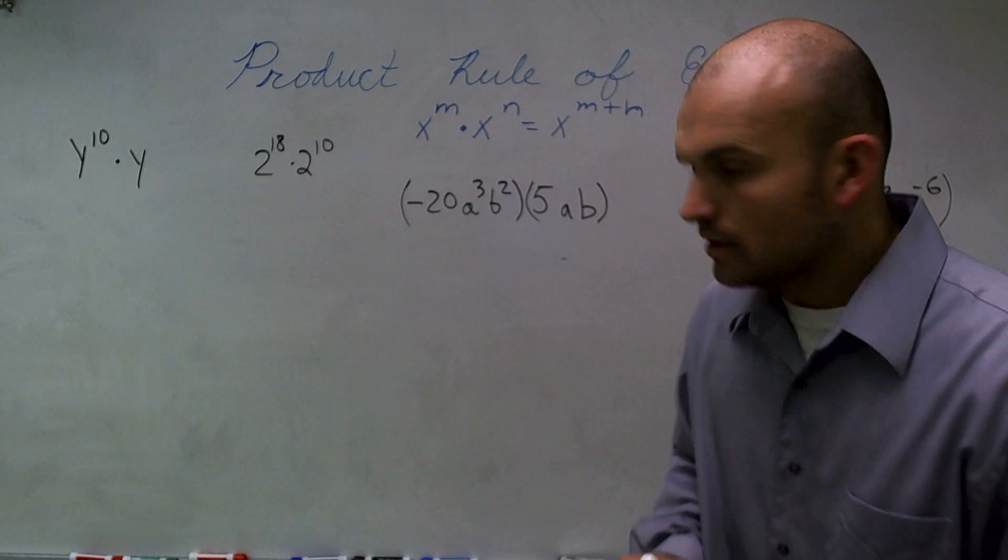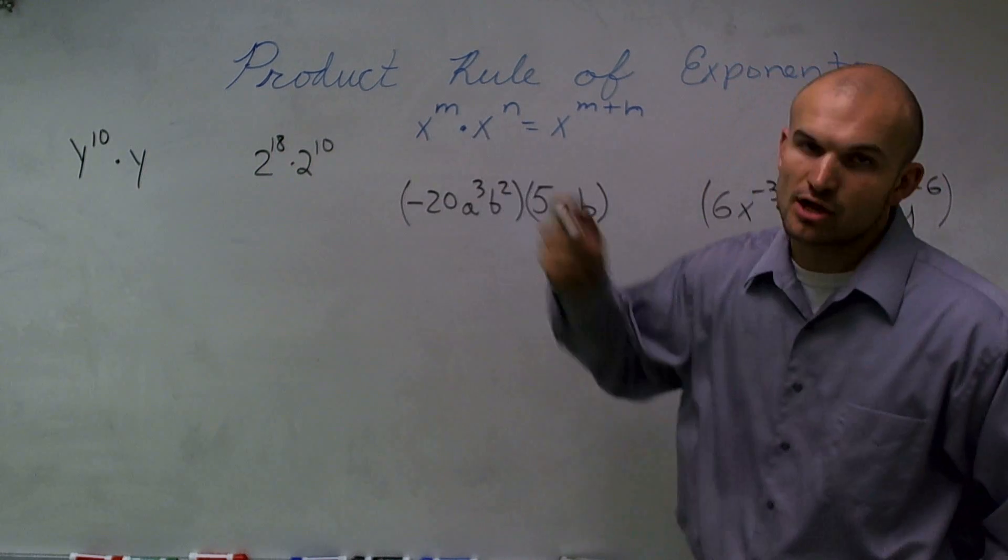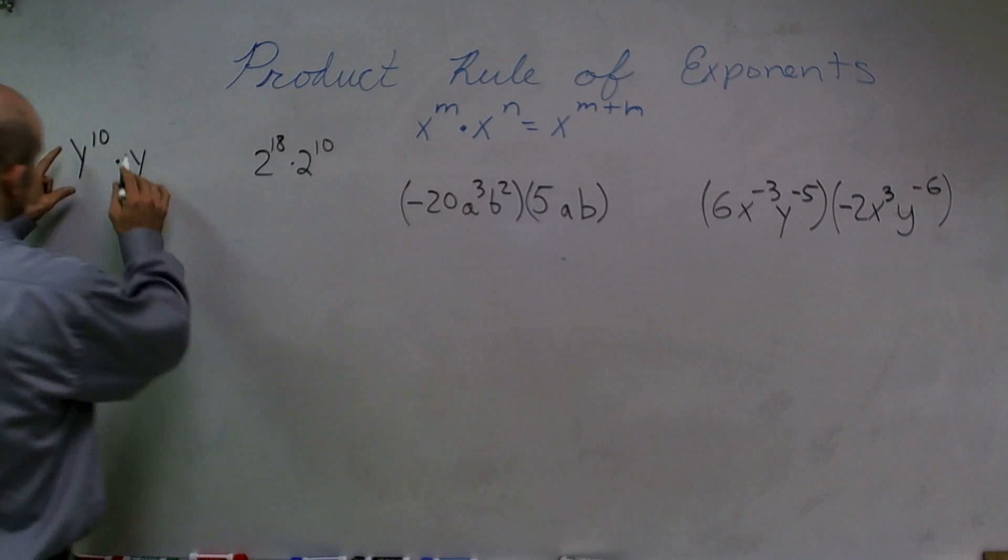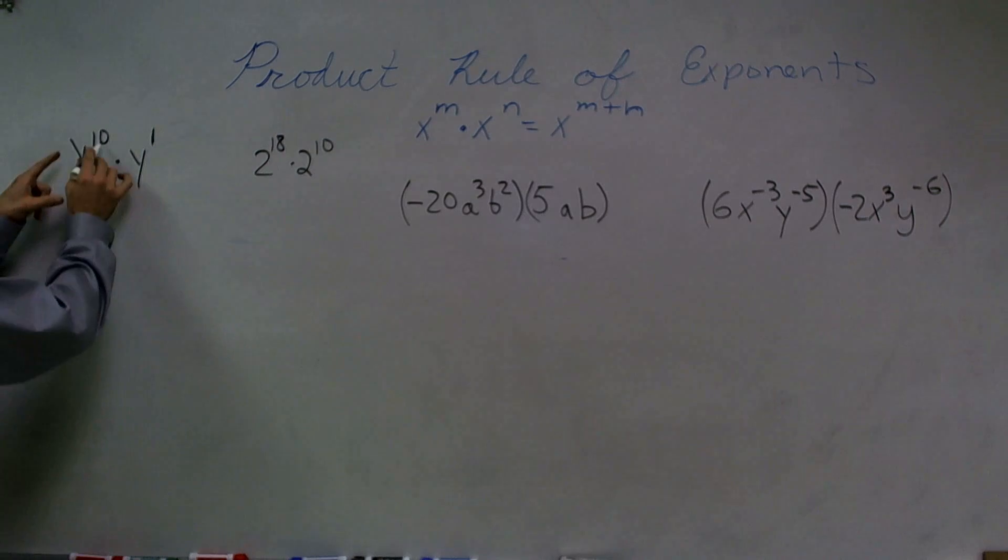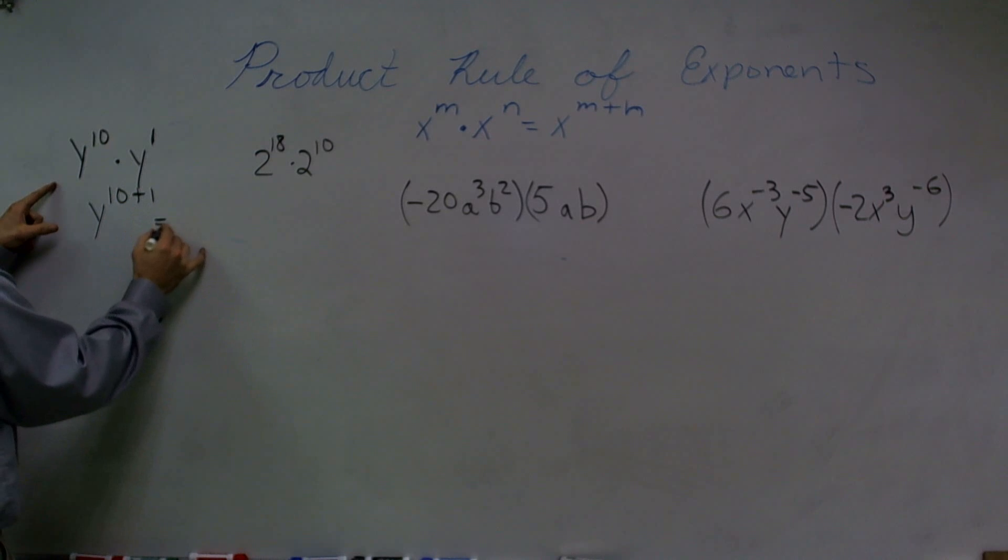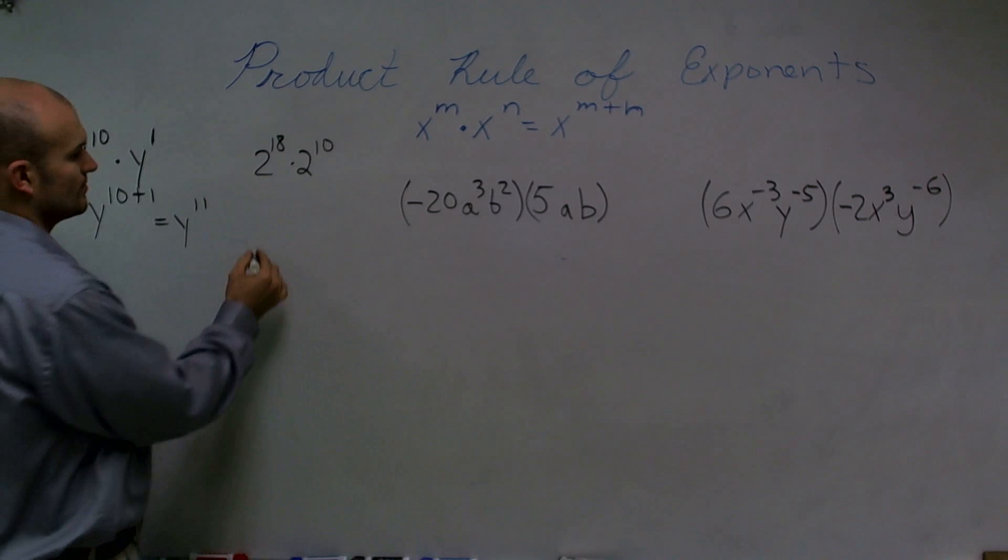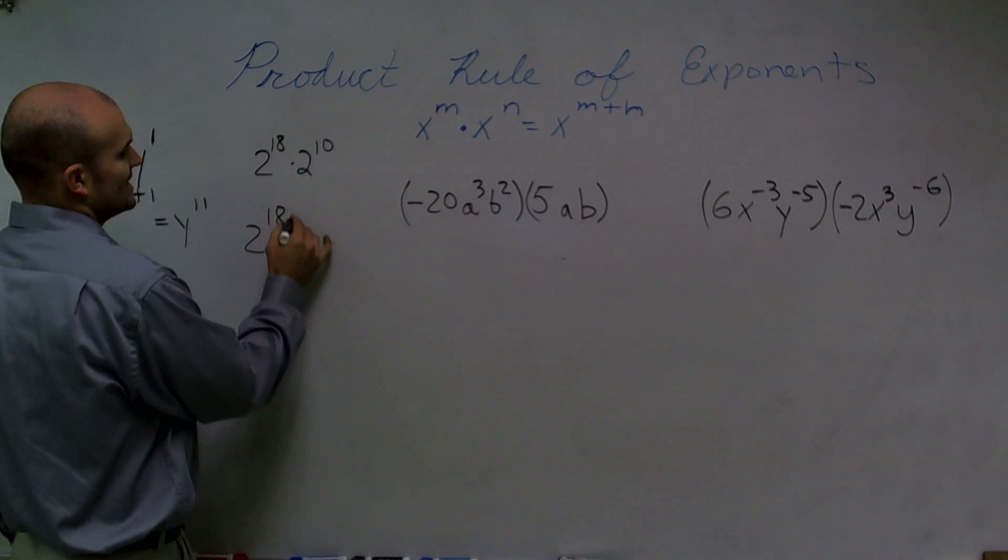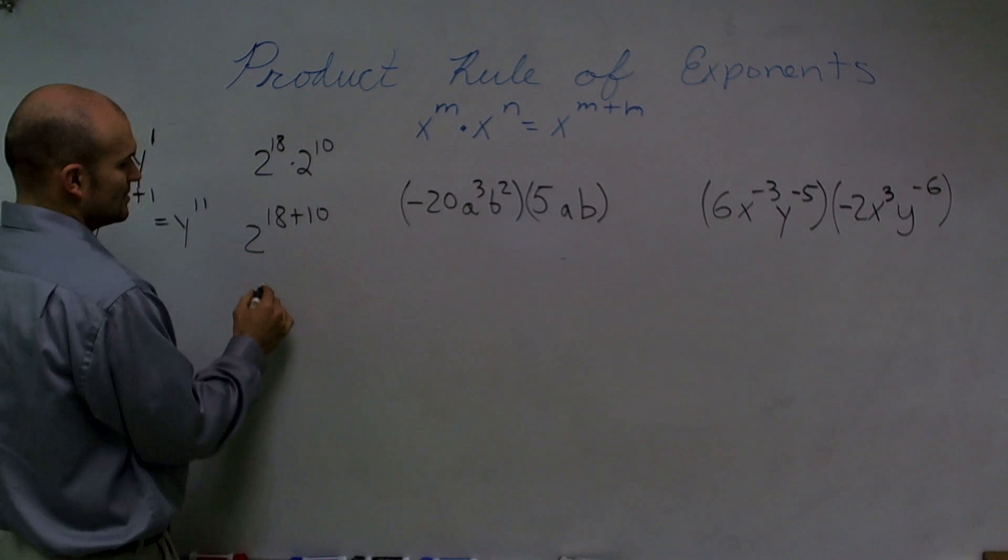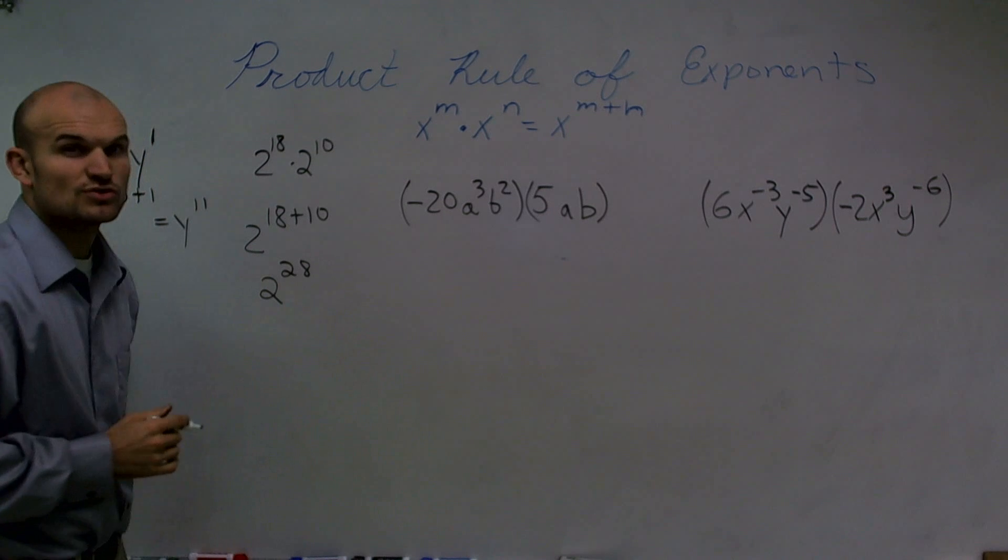Here we go again. So what I want to do is let's just go and use our product group exports to solve each one of these problems. So here, I have an exponent of 1. So I'm going to write this as y to the 10 plus 1 equals y to the 11. Over here, I'm going to write this as 2 to the 18 plus 10. So therefore, 2 is going to equal 2 to the 20th power.